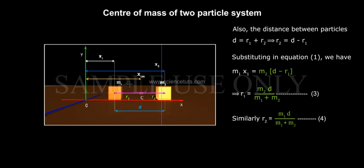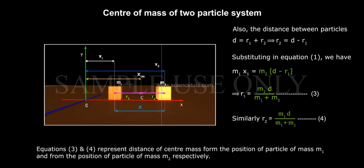Similarly, R2 equals M1 D by (M1 plus M2), equation 4. Equations 3 and 4 represent distance of centre of mass from the position of particle of mass M1 and from the position of particle of mass M2 respectively.